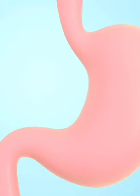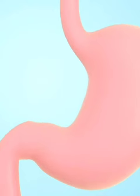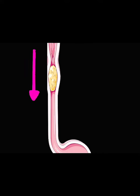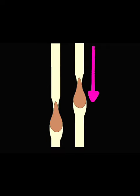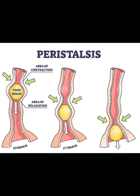Reverse peristalsis can occur in cud-chewing animals such as cows, bringing food back from the stomach to the mouth for re-chewing. Peristaltic waves are reduced when the stomach is full. The inclusion of fat in a meal can temporarily halt these motions until it is neutralized by gastric secretions or eliminated from the stomach.